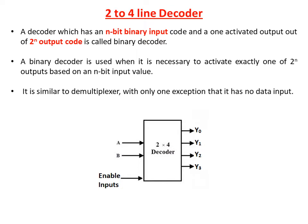The decoder that has an n-bit binary input code and one activated output of 2-power-n output code is called a binary encoder. The binary encoder is used when it is necessary to activate exactly one of 2-power-n outputs based on an n-input binary value. It is similar to a demultiplexer, with only one exception: it has no data input.